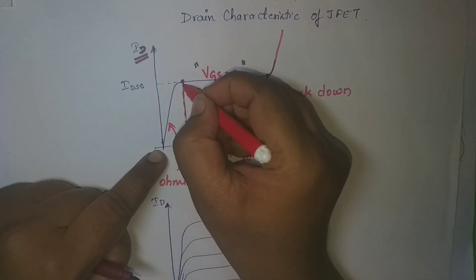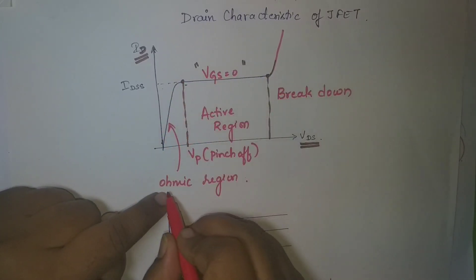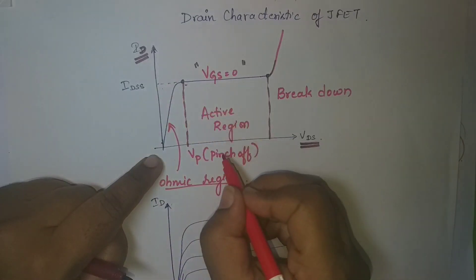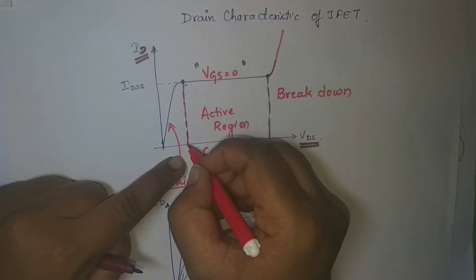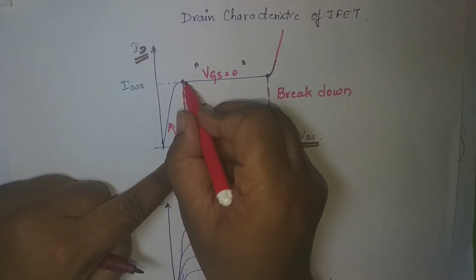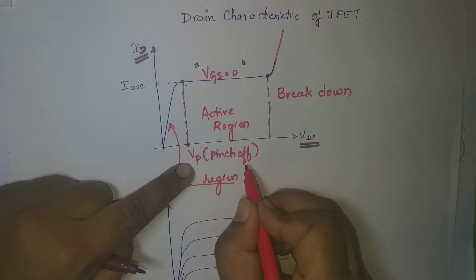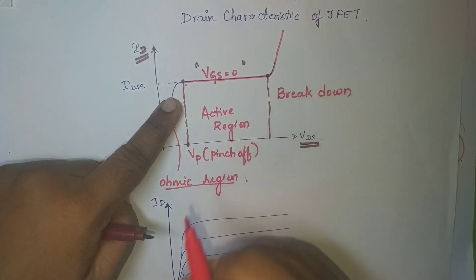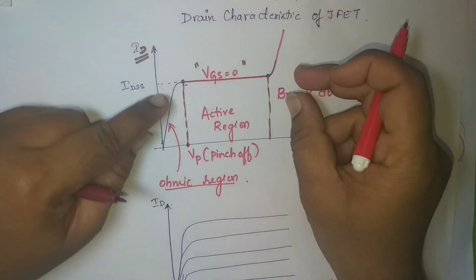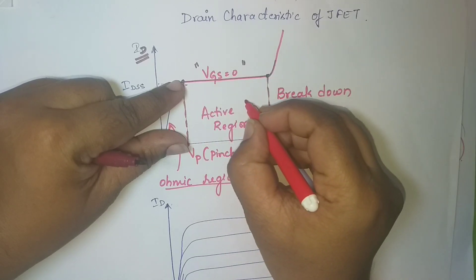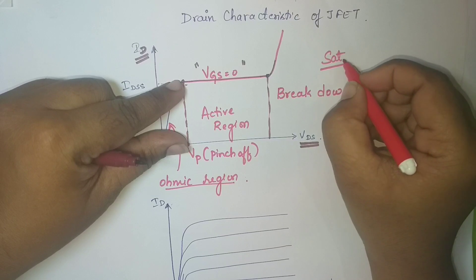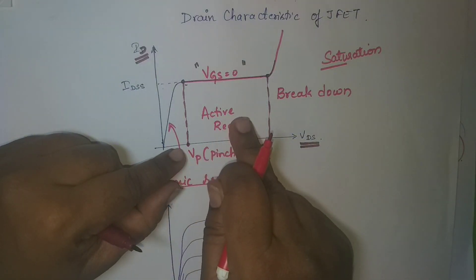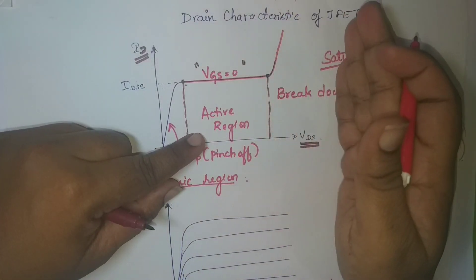The first region, where the current varies linearly with voltage, is called the ohmic region. It is called the ohmic region because the resistance makes current and voltage proportional to each other. After a certain voltage point, the current remains constant — that voltage point is called pinch-off. After the pinch-off voltage, the current remains constant. This region is called the active region, or saturation region, or because it appears after the pinch-off, it is also called the pinch-off region. Beyond that is the breakdown region.